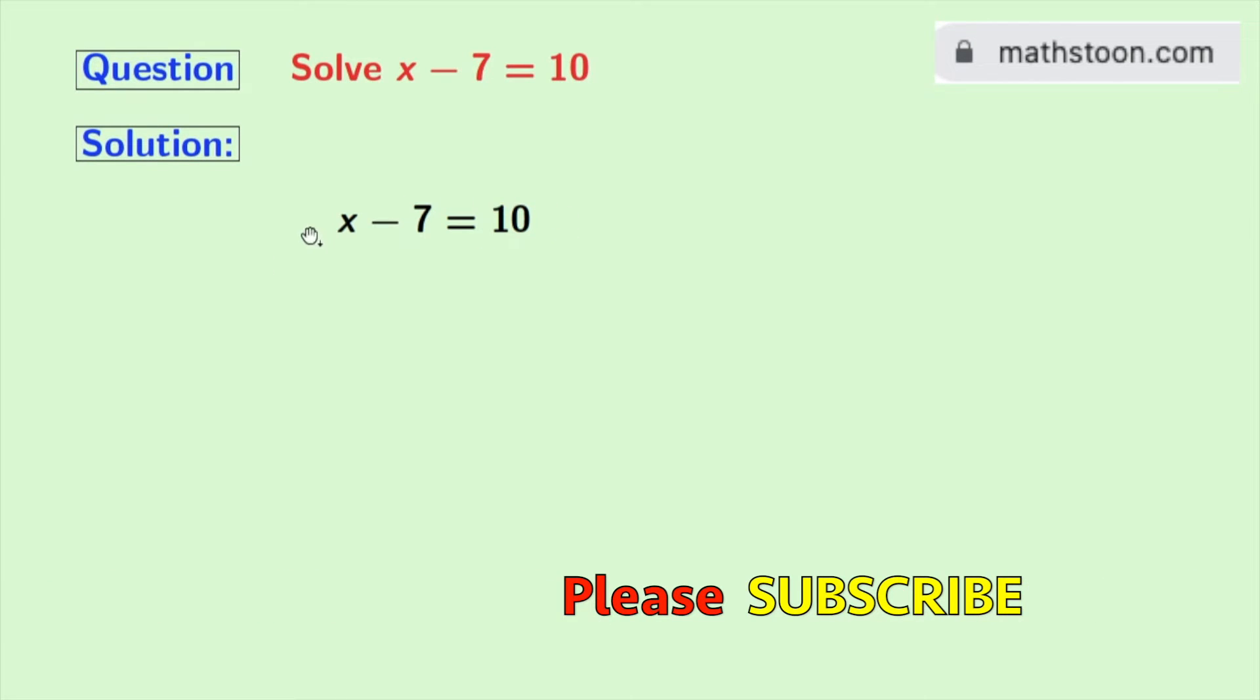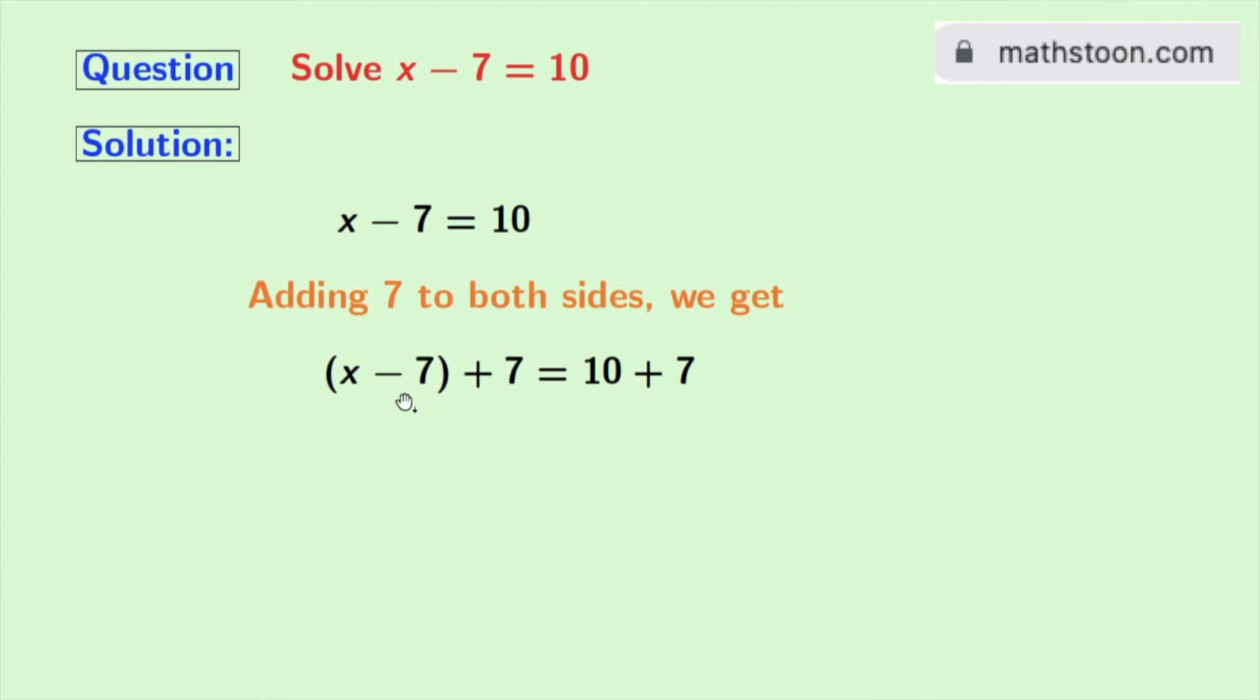This is our given equation. To solve this, we have to find the value of x. To get that, we will firstly add 7 to both sides. Doing so, we get x minus 7 plus 7 is equal to 10 plus 7.